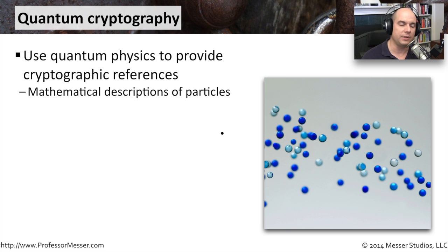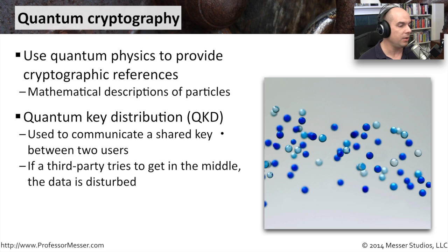We are using some practical examples of this. There's something called quantum key distribution, QKD. And when you have two users that are sending information back and forth, for instance, they may be communicating a shared key between each other.